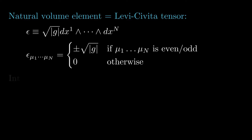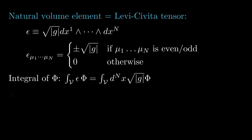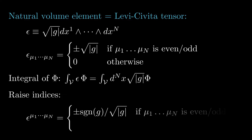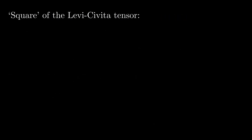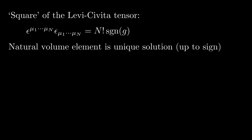Using the natural volume element, the volume integral of phi becomes the integral of d^n x times the square root of |g| times phi. We can raise indices on the Levi-Civita tensor with the inverse metric. Using the properties of determinants, we find the components are plus or minus the sign of g divided by the square root of |g|, with plus or minus applying for even or odd permutations. With these explicit results, one can show that the square of the Levi-Civita tensor equals n-factorial times the sign of g. The natural volume element is the unique n-form, up to a sign, satisfying this equation.